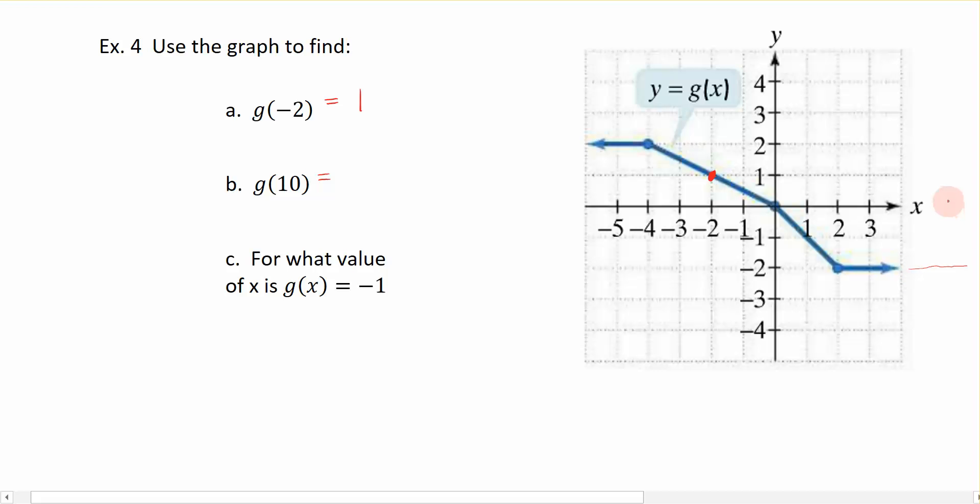Well, if I were to put the hash mark over here for 10 on the x-axis, that would tell me that the corresponding ordered pair or the corresponding y value would occur at negative 2. Because all y values as we move off to infinity are occurring at negative 2. So this is negative 2.